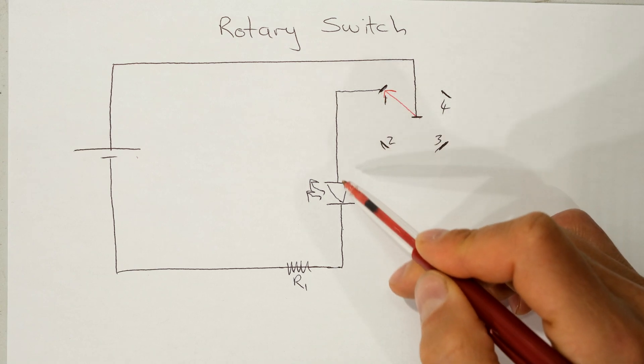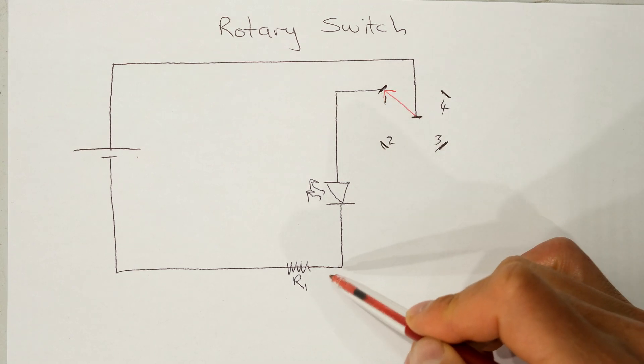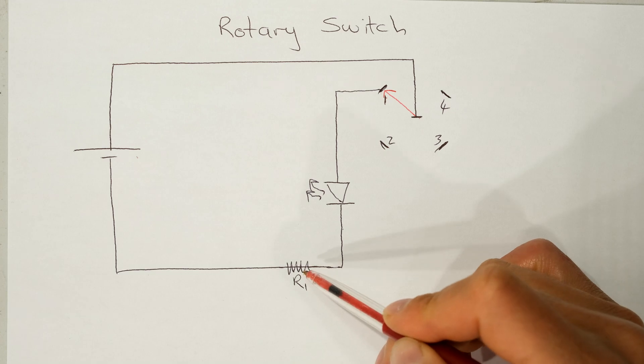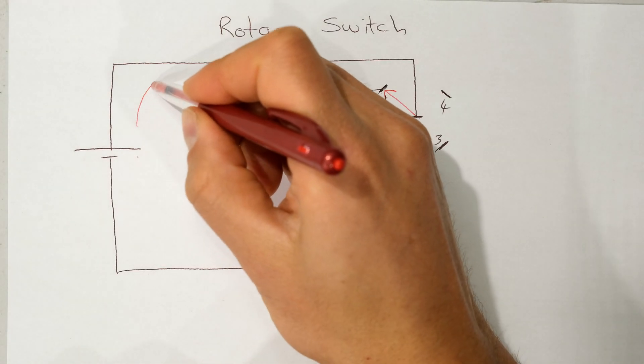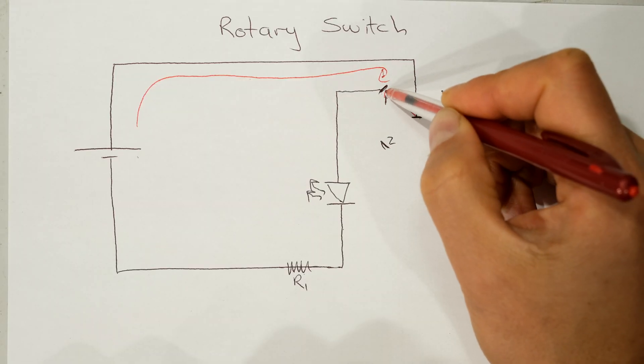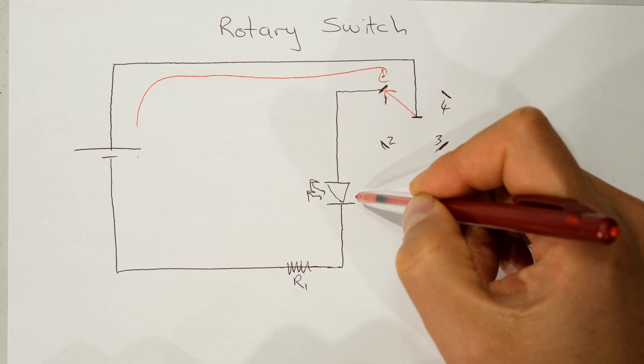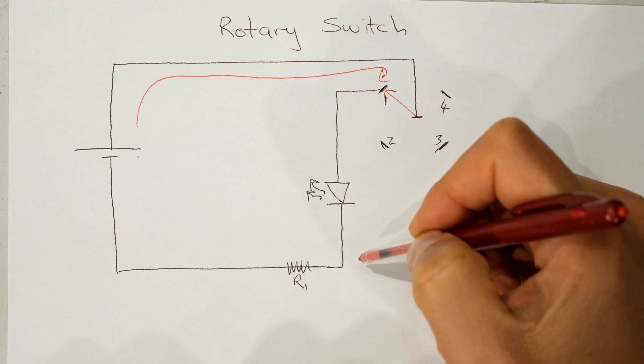Now on pin one I have connected an LED and just a current limiting resistor. When I rotate the switch to position one, current will flow through here and out through pin one, and then it'll go through this LED and the light will shine.